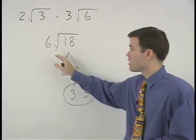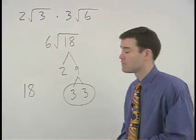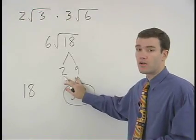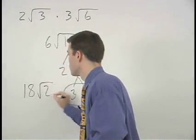So we have 3 times 6 or 18 on the outside of the radical. The 2 that did not pair up stays inside the radical. So we have 18 root 2.